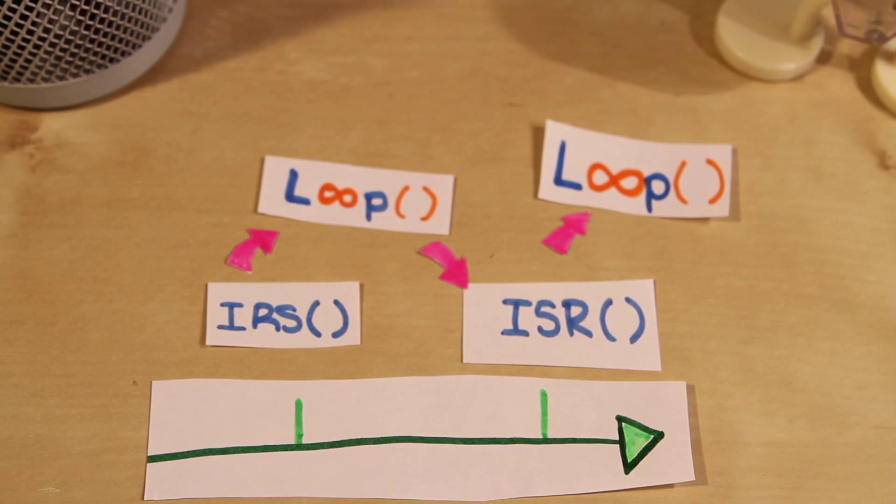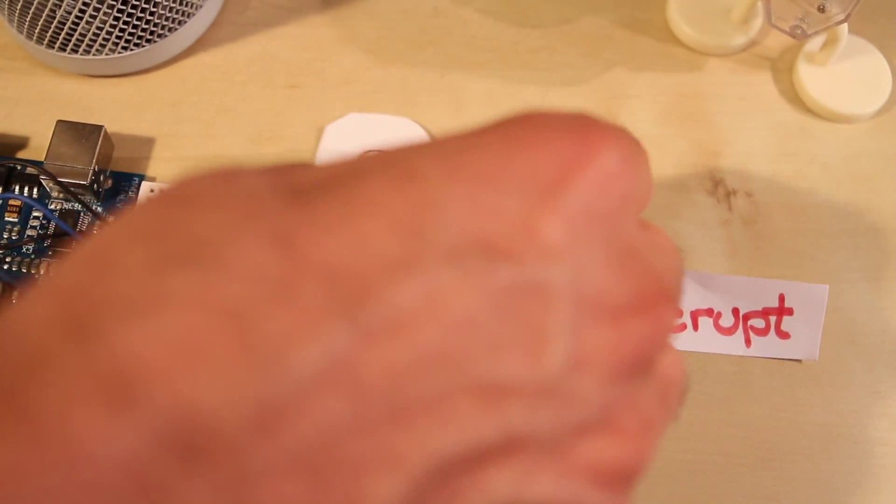Okay, so we have a gist of what timer interrupts are, but how do you use it to create a tone?